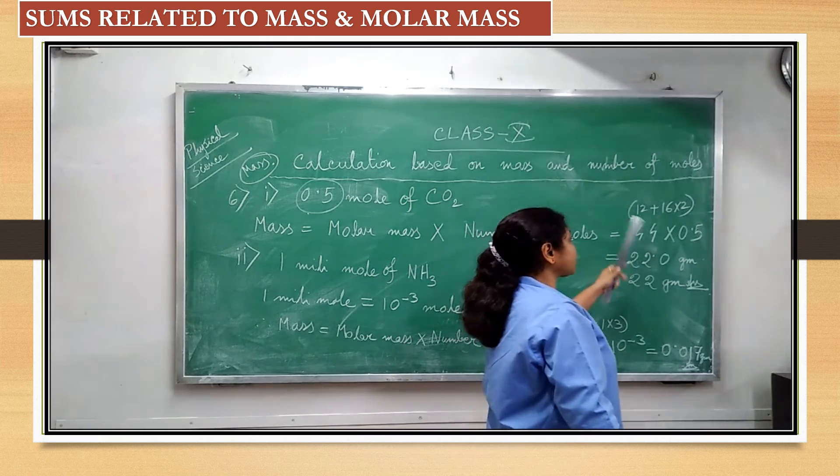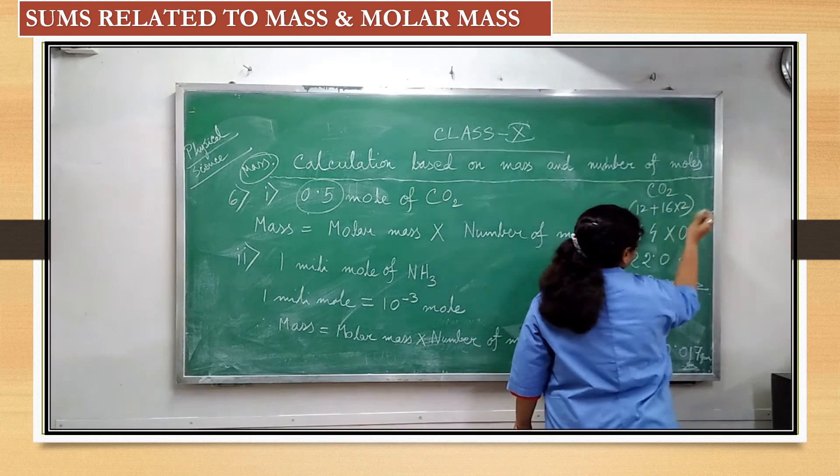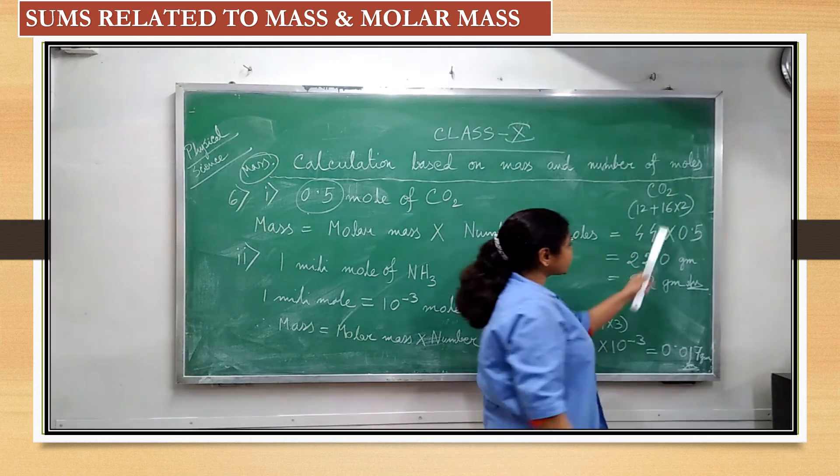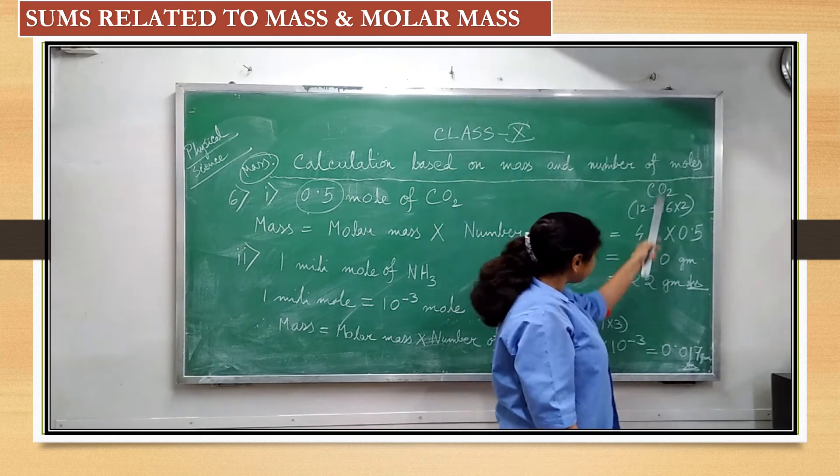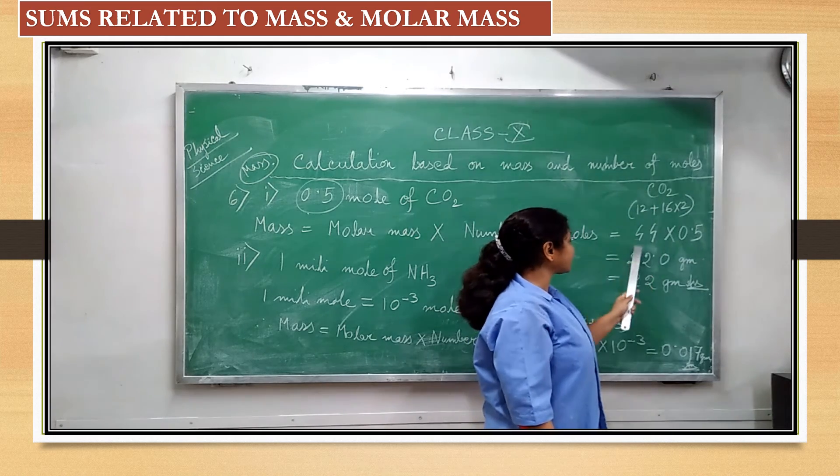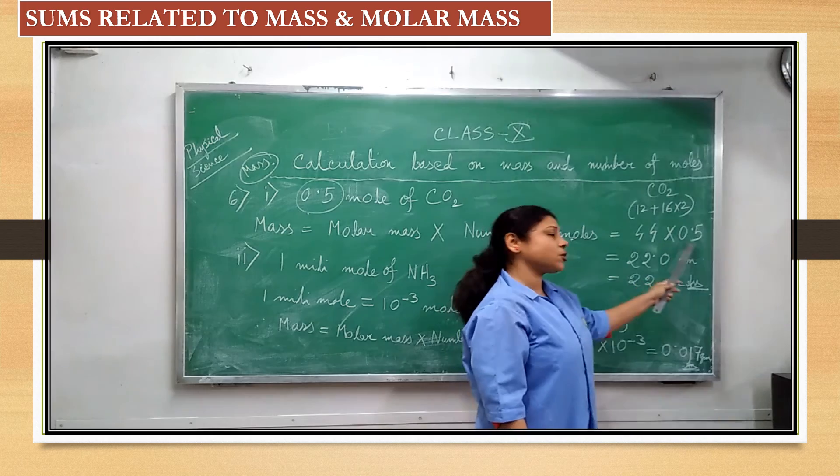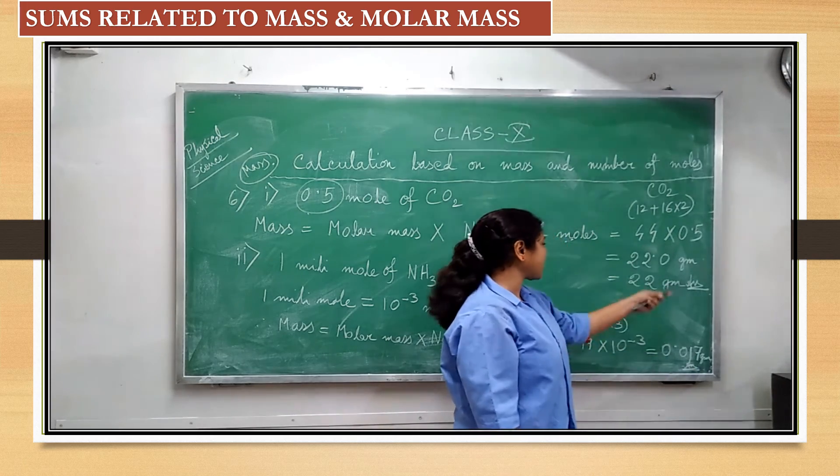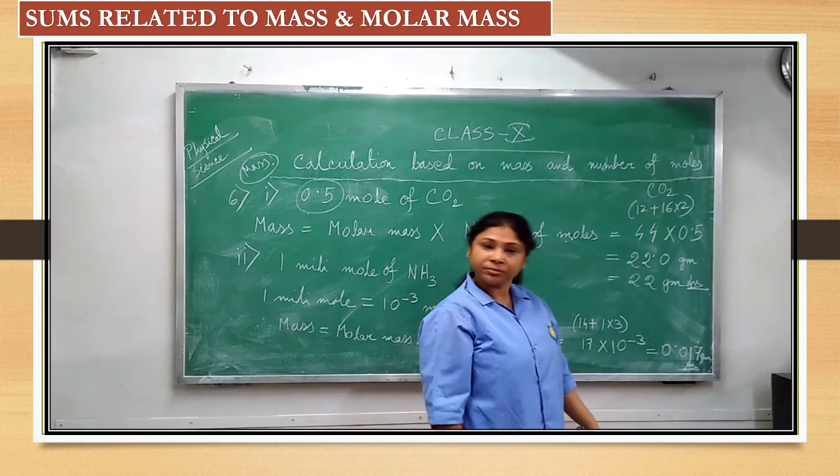44, how it is coming? Because according to the formula, 16 into 2, 16 into 2, I have written that expression over here, 16 into 2, plus for carbon, this is 12. So, it is coming 44. 44 into 0.5 now, it is easy, just do that calculation. 44 by 2 gram, that makes 22 gram. That's it.